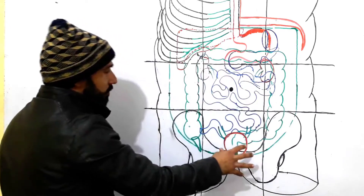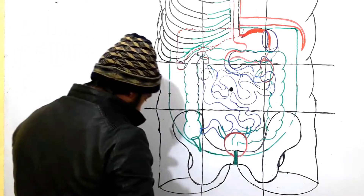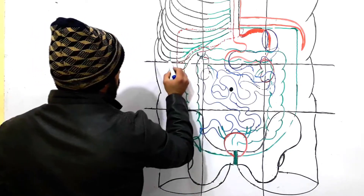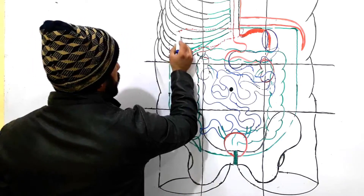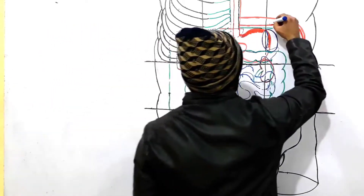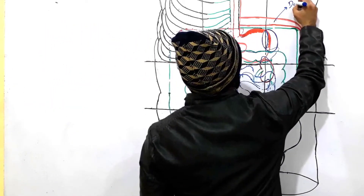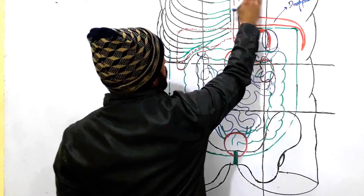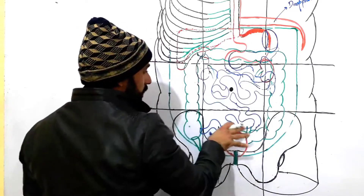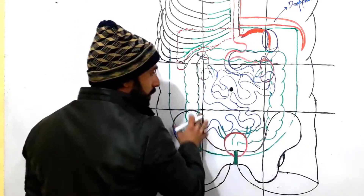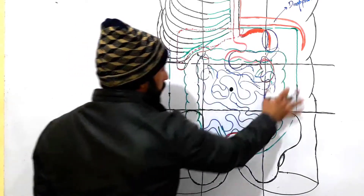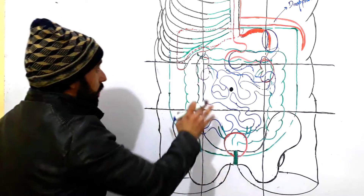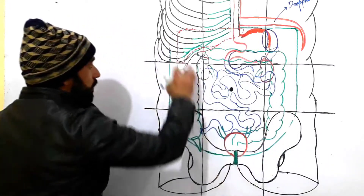Let's move forward and divide all these regions. The first region we are going to discuss is our abdominal cavity. This is the diaphragm — above the diaphragm we have our thoracic cavity, and below the diaphragm we have our abdominal cavity. The abdominal cavity has been divided into nine regions.